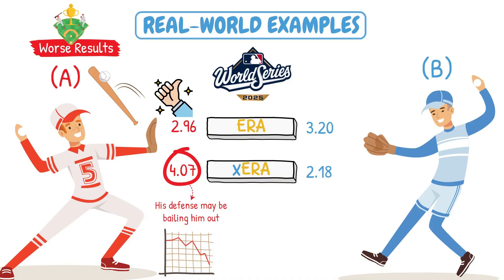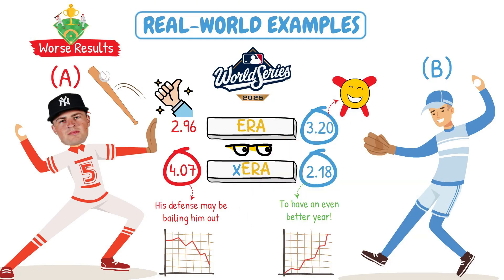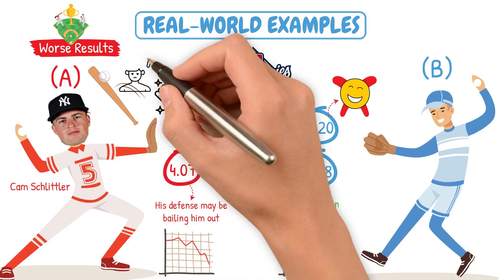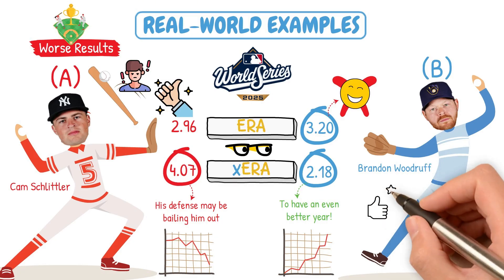Pitcher B had a solid 3.2 ERA, but a 2.18 expected ERA. This individual pitched to a 3.2 — nothing to laugh about in today's game — but his xERA tells us we anticipated him to have an even better year than he did. You would expect this pitcher to perform even better next year looking at these two statistics. Pitcher A was Cam Schlittler, and Pitcher B was Brandon Woodruff, who had the potential to have an even better season than he did.